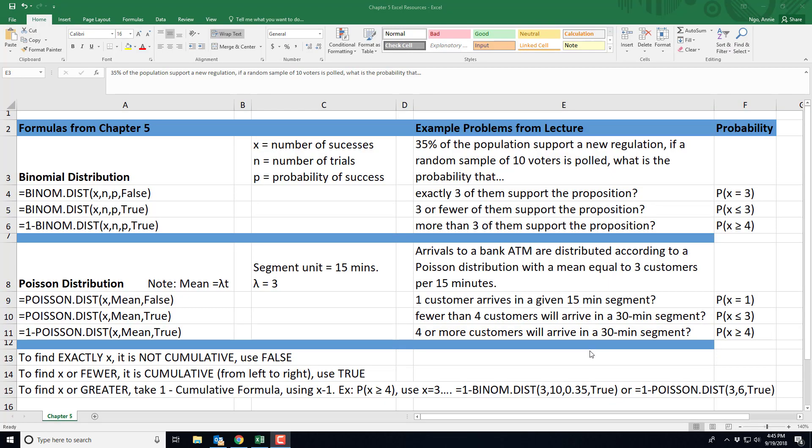In this video I'll show you how to use Excel to find the binomial distribution. So here we have the example from the lecture where it states that 35% of the population support a new regulation.